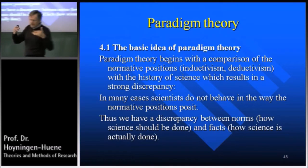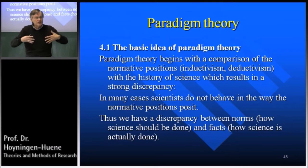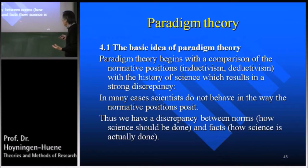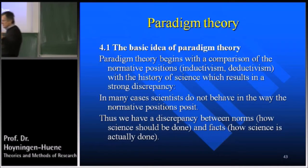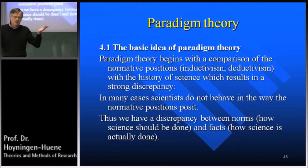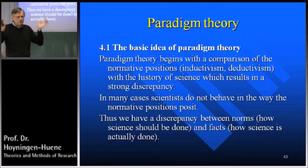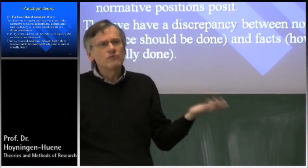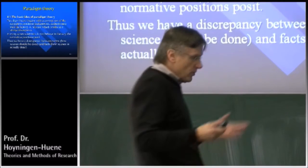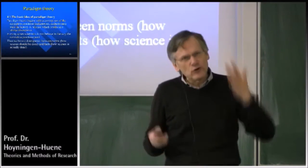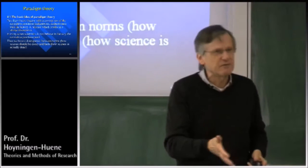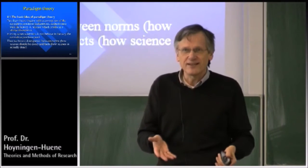When scientists do not behave in the way the normative positions prescribe, we have a discrepancy between norms — how science should be done — and facts — how science is actually done. But if there is a discrepancy, which one is false? That's an open question. There are two possibilities: either these norms that inductivism and deductivism posit are for some reason false — unrealistic or mistaken — or the norms are fine and the actual science has been sloppy and bad.